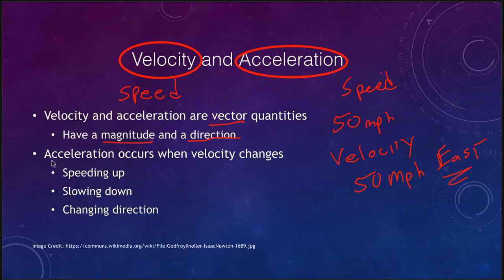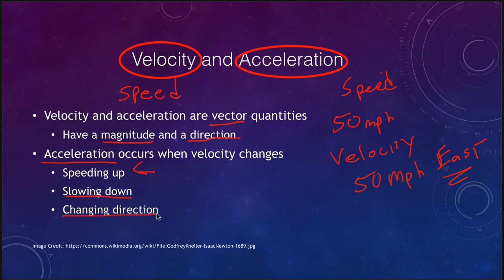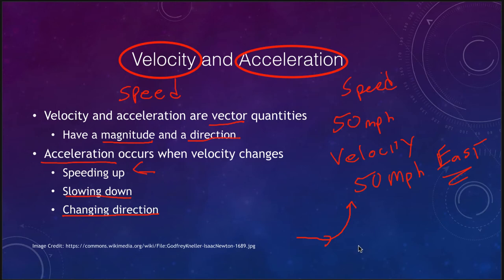Acceleration is what happens when your velocity changes. We typically think of acceleration as speeding up, but you can also have acceleration when you slow down — sometimes called deceleration. Another form of acceleration is a changing direction. If you go from traveling 50 miles per hour east and turn to go 50 miles per hour north, even though your speed didn't change, you were accelerating because your direction changed. A changing direction is also an acceleration, and we'll see that this means a force is needed — in the case of orbits, that force is gravity.